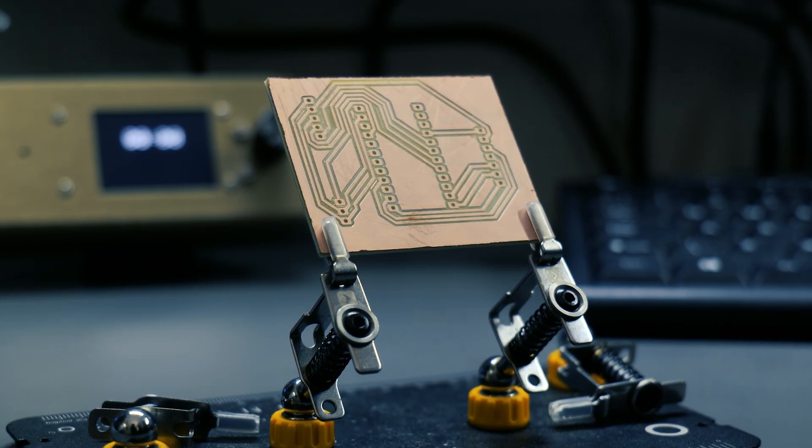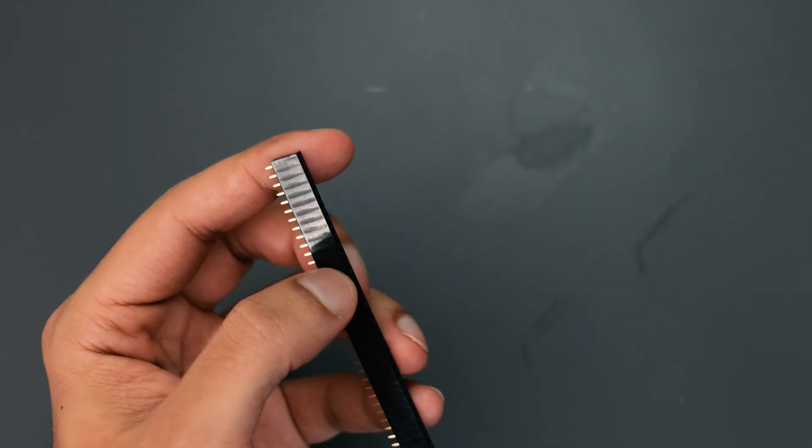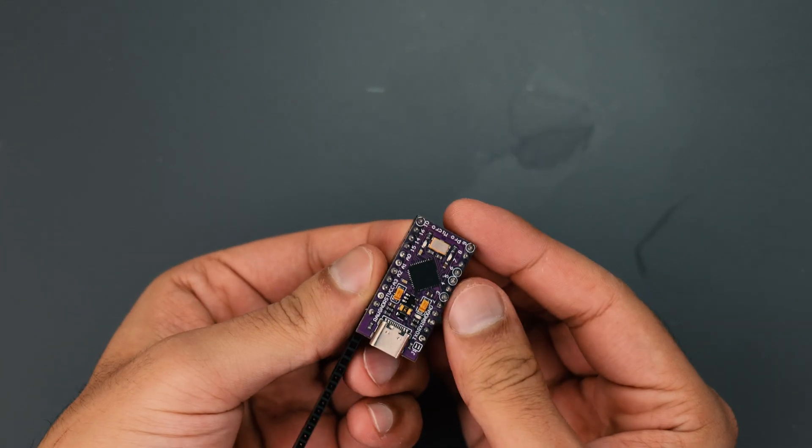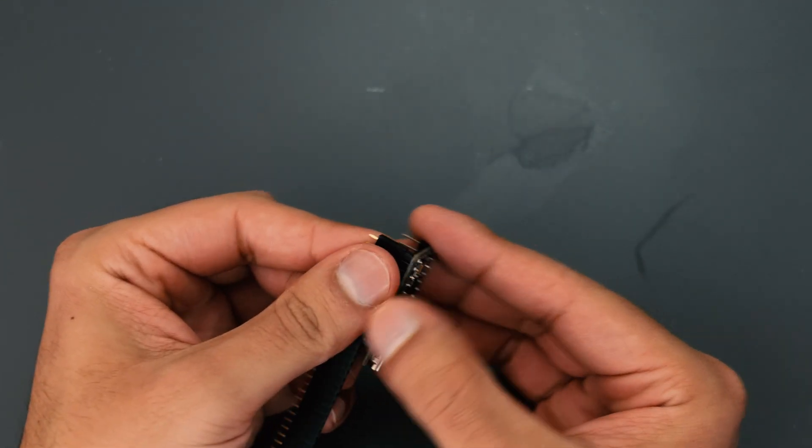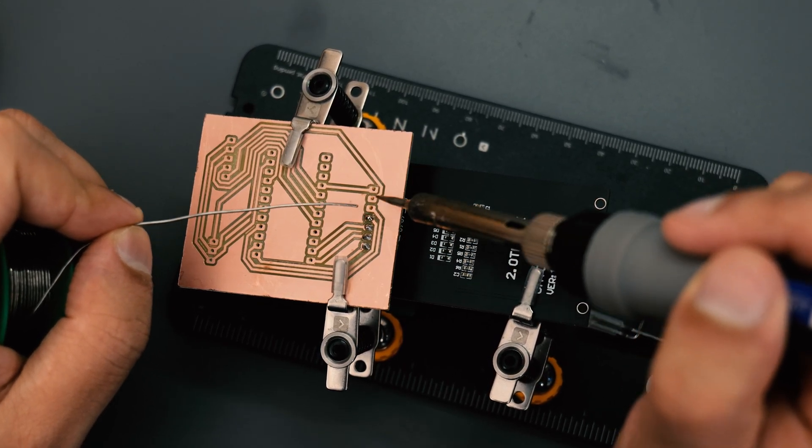Because this was a test PCB I didn't want to solder my components directly onto the board, so I decided to use some female header pins so that I can remove them once I checked everything. And then with everything ready it was time to get the circuit soldered up.